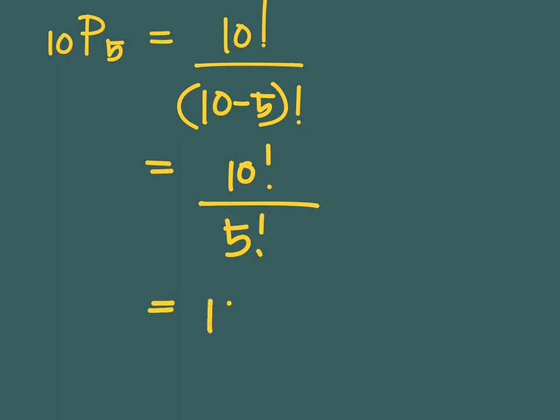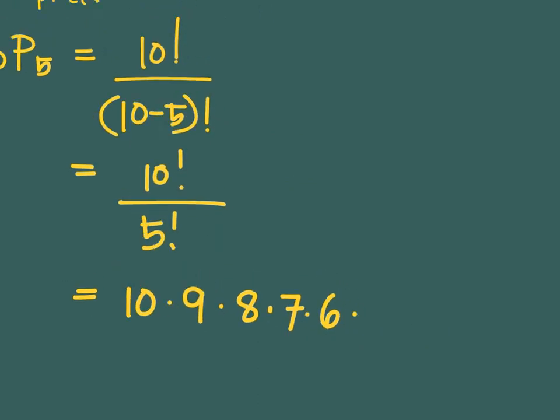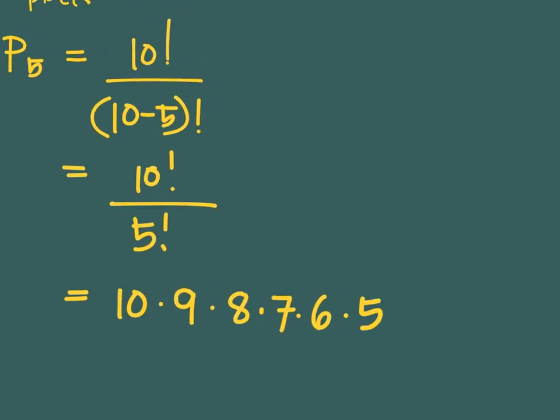When we say 10 factorial, it means you start from 10 and reduce by 1: 10 times 9 times 8 times 7 times 6 times 5, and you can go all the way down to 1. But since the denominator is equal to 5 factorial, we could stop at 5 factorial. This 5 factorial in the denominator will cancel with the 5 factorial in the numerator.